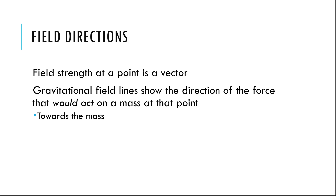Here are our official definitions. Gravitational field lines or field vectors show us which way a force would act if I put a mass at that point. If I put a little mass somewhere near the surface of the Earth, it would be pulled straight down towards the center of the Earth. So that's really all the direction of the line is representing — if you put something here, it's going to pull it this way.